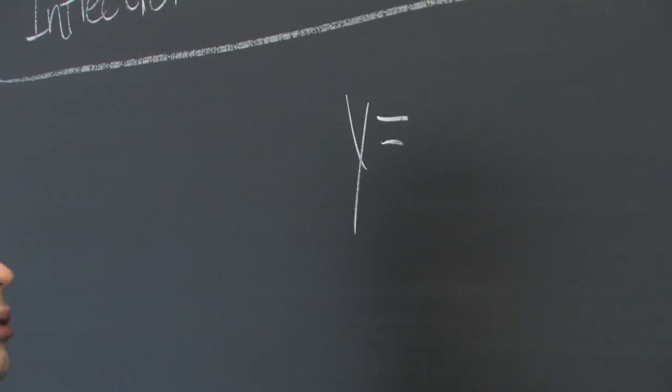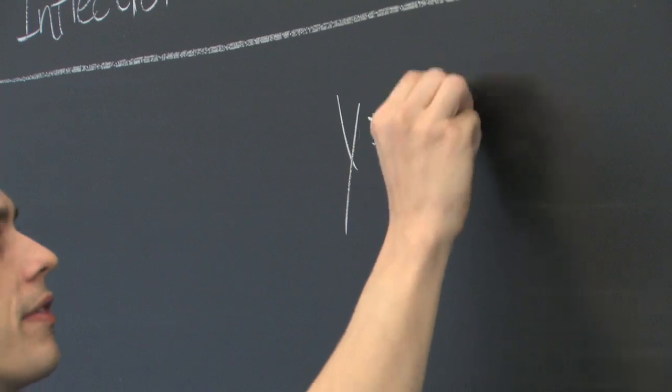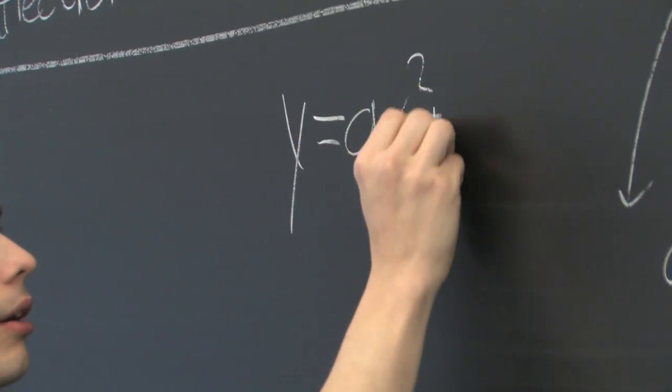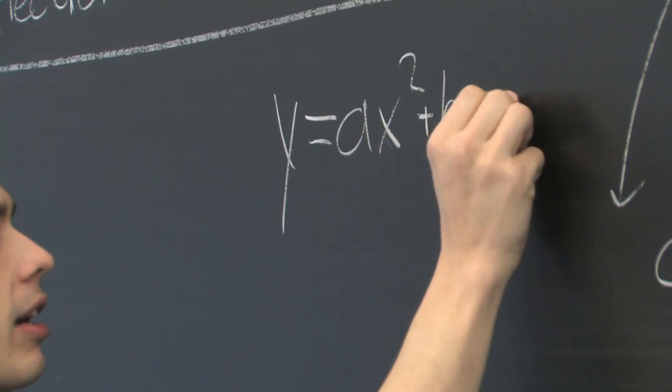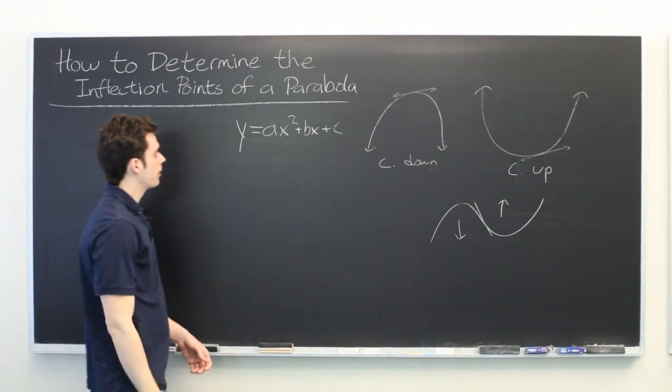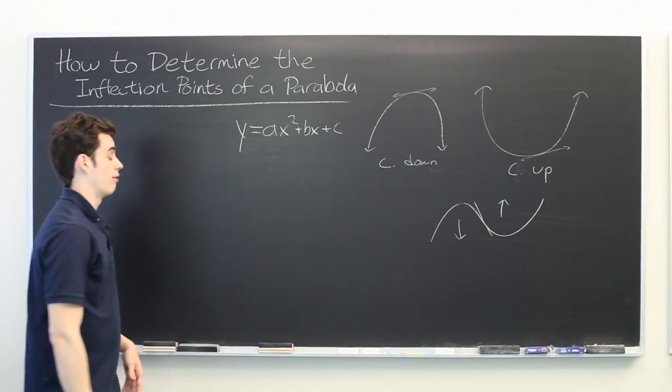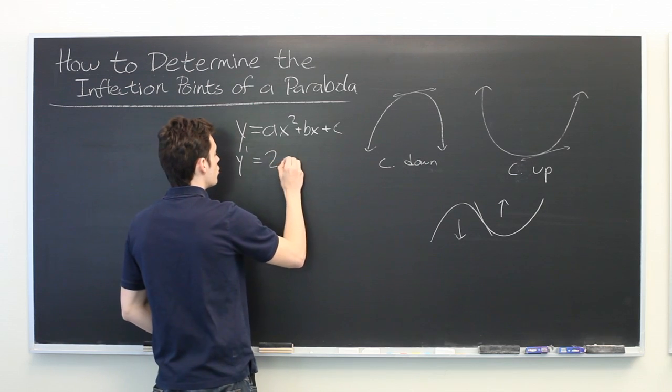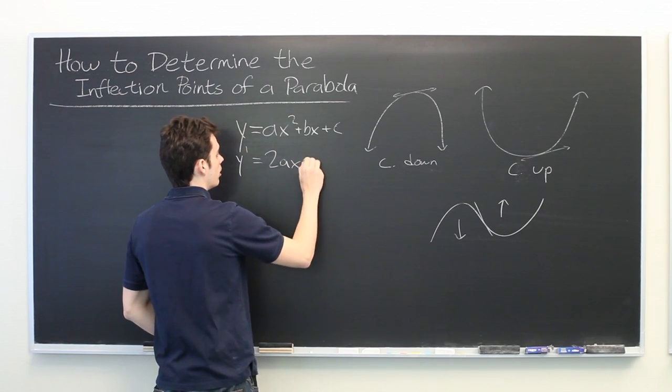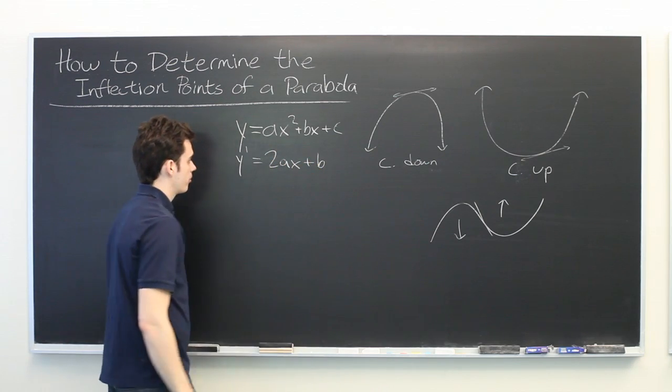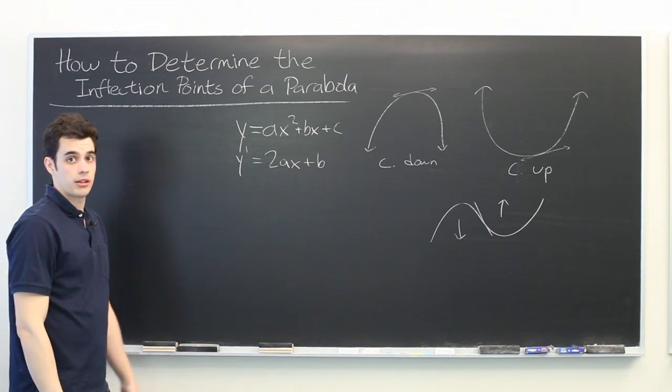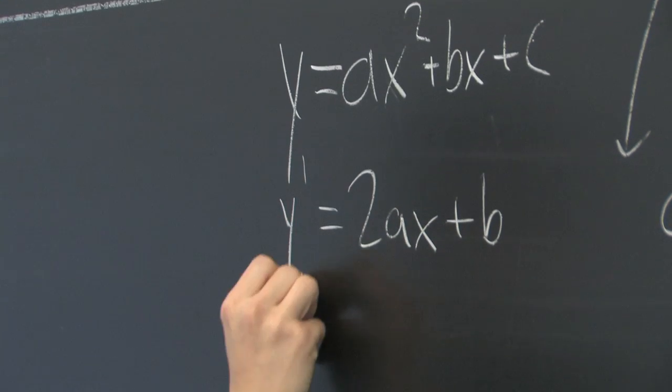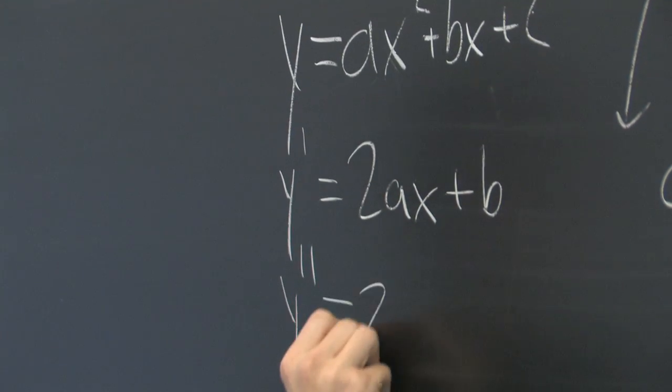So let's look at a general parabola of the form y equals ax squared plus bx plus c. Let's take the first derivative of this, y prime equals 2ax plus b. And then the second derivative, y double prime equals 2a.